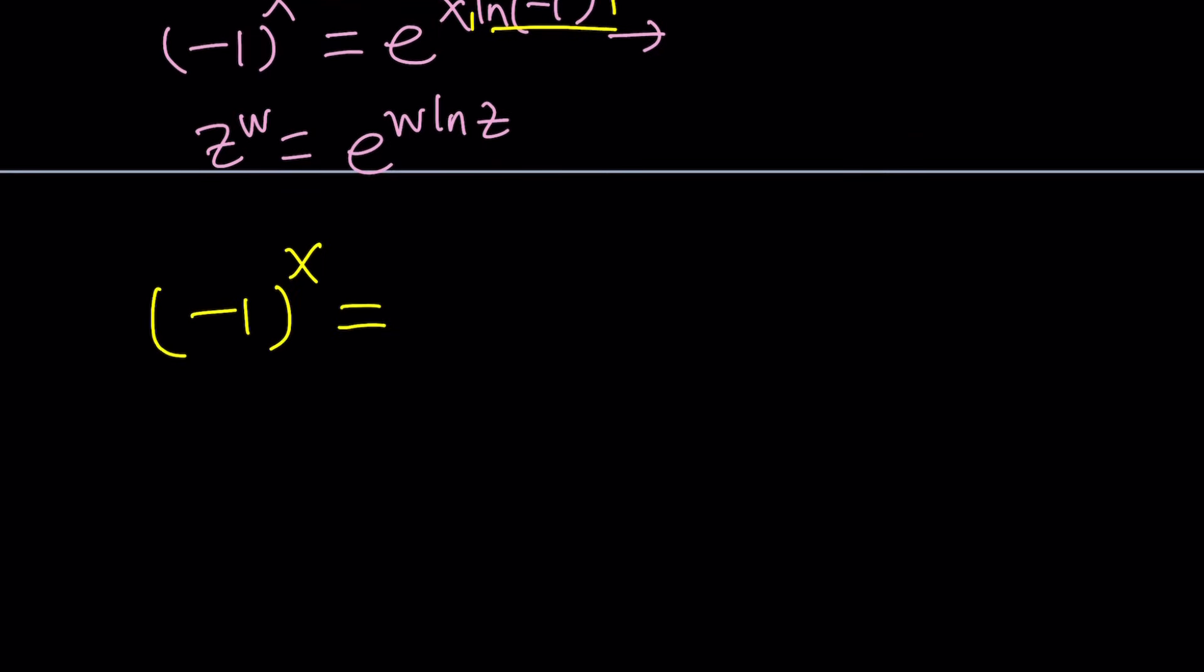You could do this or you can think of it this way too. How do you write negative 1 in a complex form? You can write it as e to the power of i pi, right? That's just the principal form, the principal value because you're allowed to add. You could also write this as pi plus 2 pi n, but I'm just going to keep it simple. And then, of course, I'm going to raise it to the power of x. That's going to give me e to the power of i pi x.